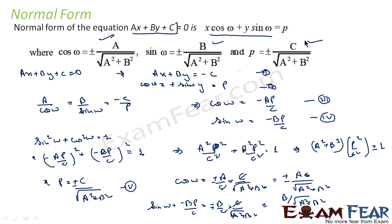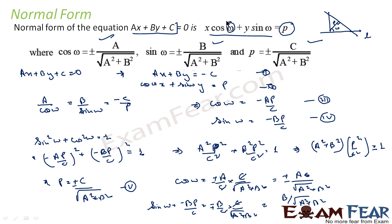Thus we have written the general equation ax + by + c = 0 in normal form, where we know the length of the normal p and the angle ω which the normal makes with the positive x-axis. To summarize: we can write the general equation in slope-intercept form (slope m and intercept), intercept form (both x and y intercepts a and b), and normal form (normal length p and angle ω).